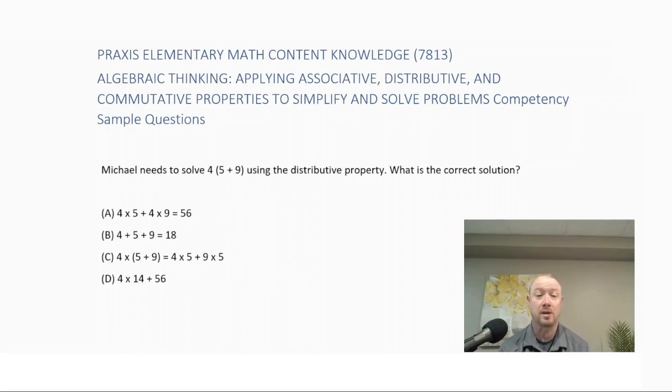Michael needs to solve 4 times the quantity (5 + 9) using the distributive property. What is the correct solution? We have to remember with the distributive property that we're multiplying each term inside the parentheses by the number out front. So we're going to have 4 × 5 + 4 × 9, and that would be 20 + 36, which would give us our answer of 56. So the correct answer here is choice A.